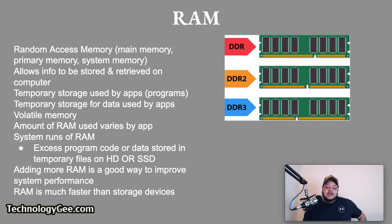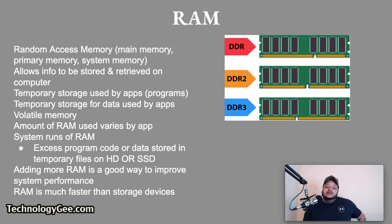The amount of RAM used by an app varies depending on whether the app is idle or being used to view, create, or modify a file. The larger the memory in a device, the more programs that can run simultaneously and the larger the data files that can be stored in memory. When a system runs out of RAM, excess program code or data can be stored in temporary files on the system's mass storage device. Adding more RAM is a good way to improve system performance because RAM is much faster than storage devices. In this picture you're looking at three DDR RAM sticks.